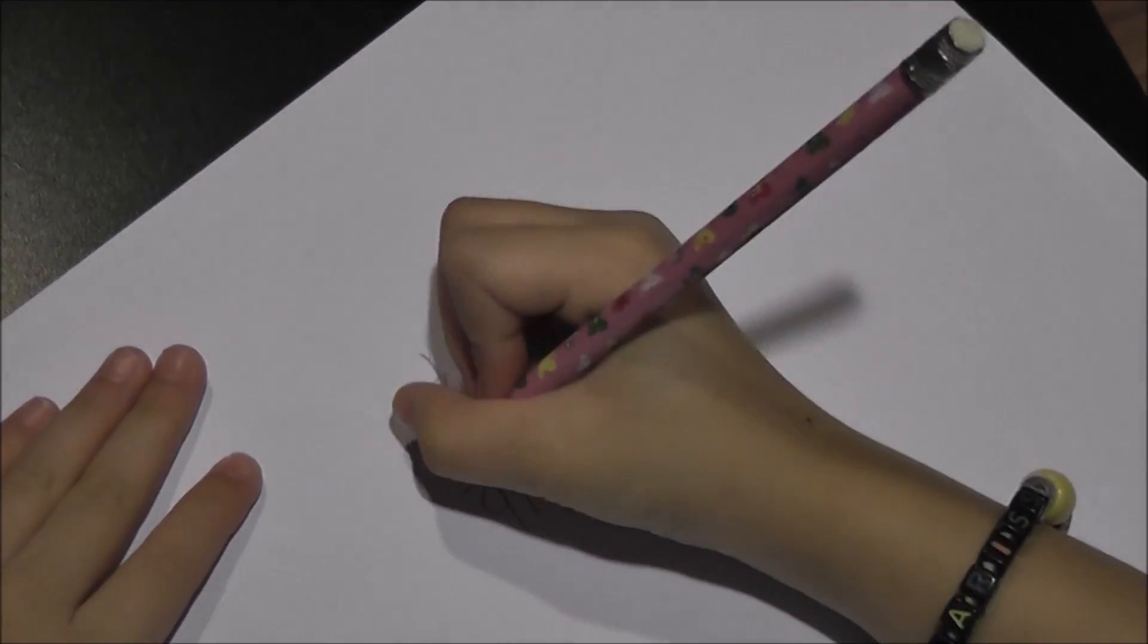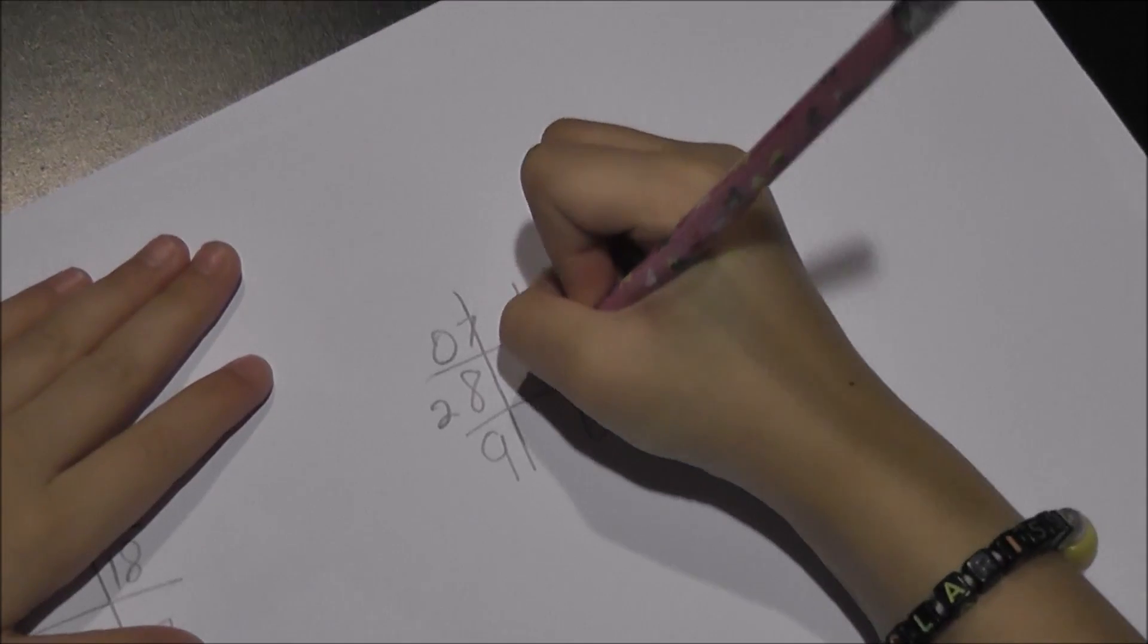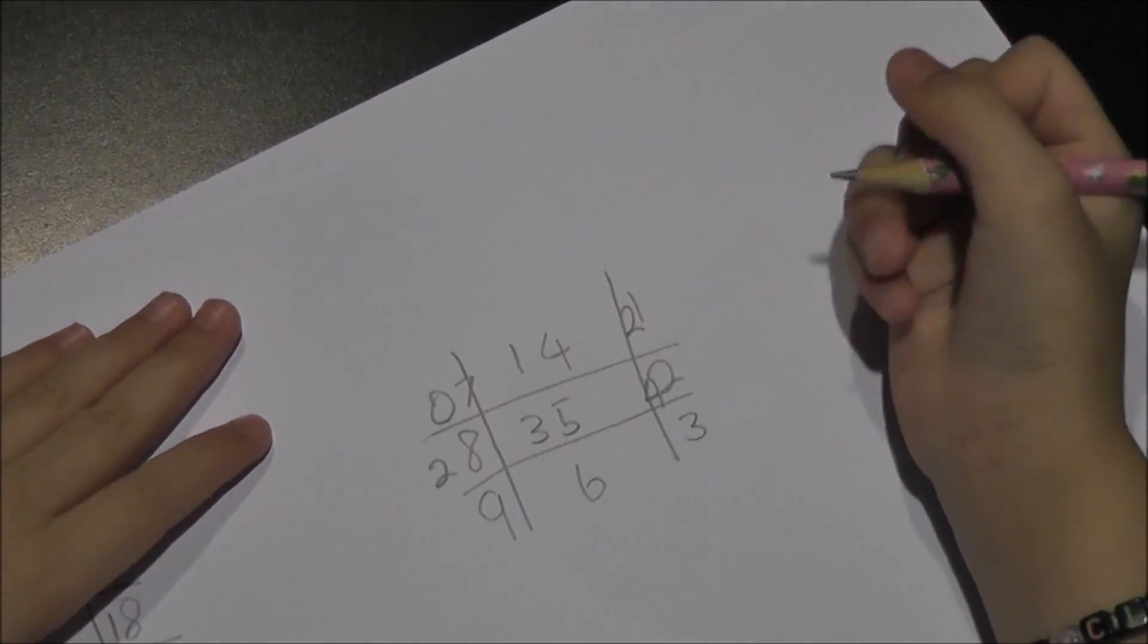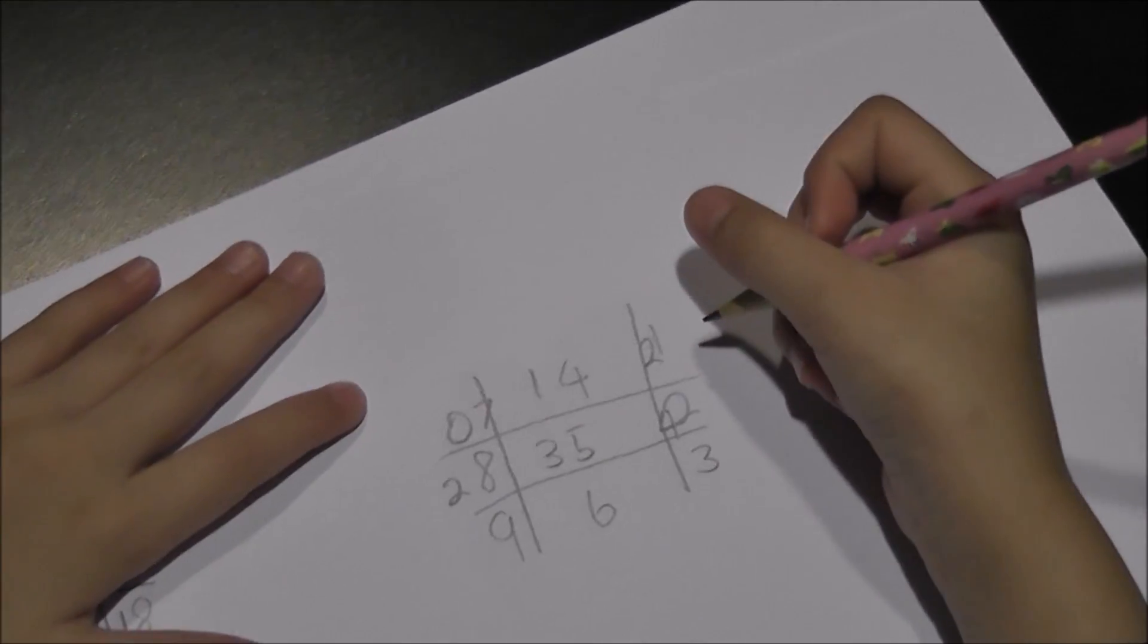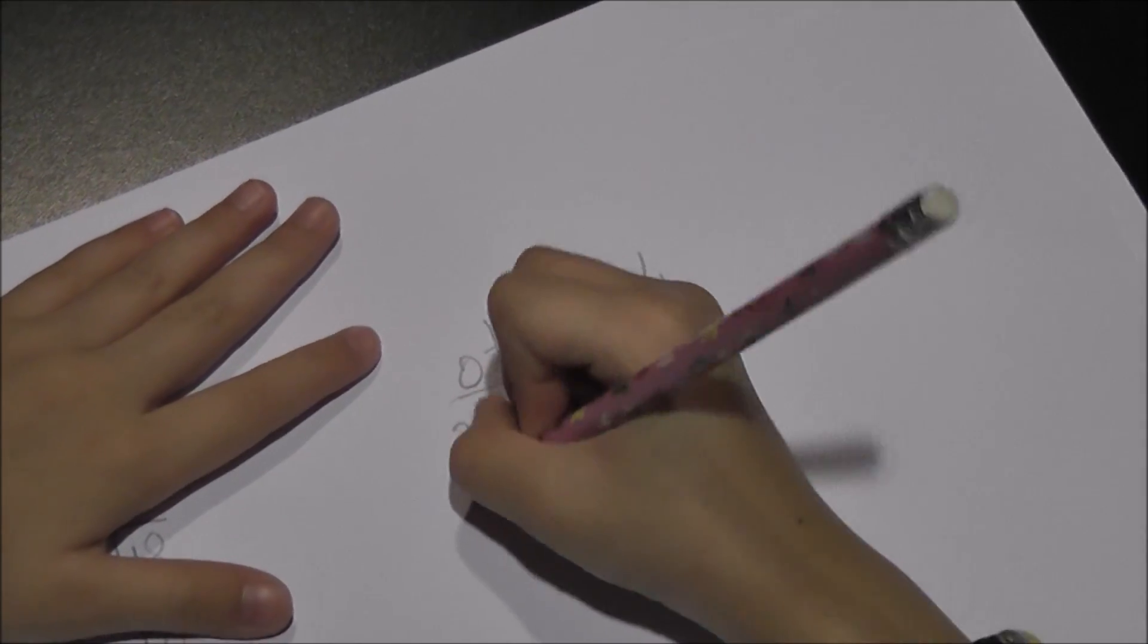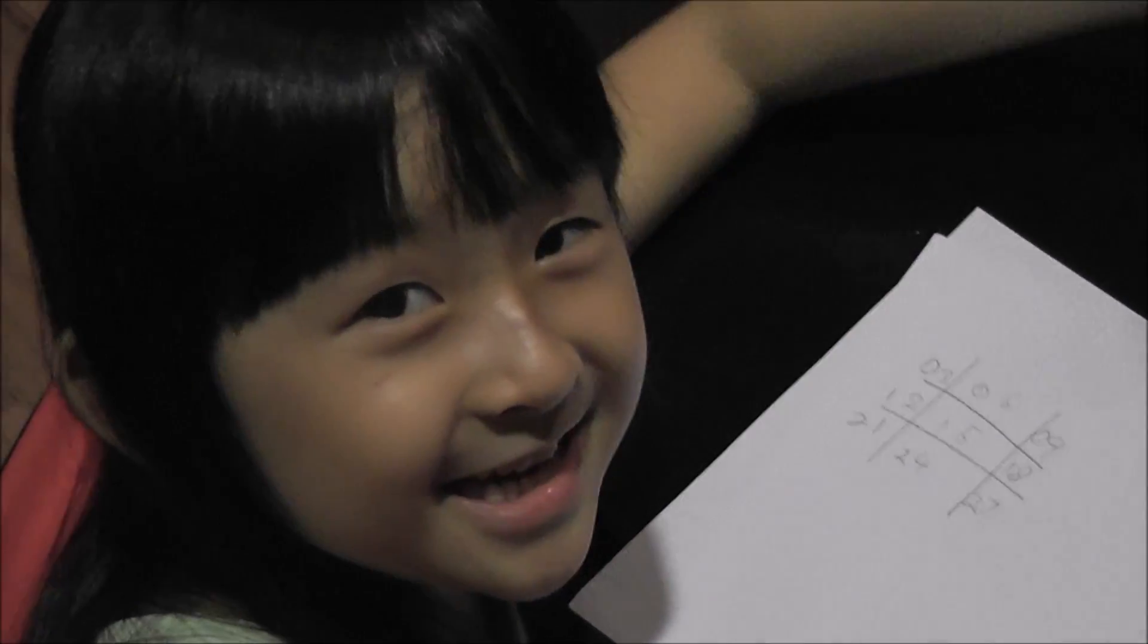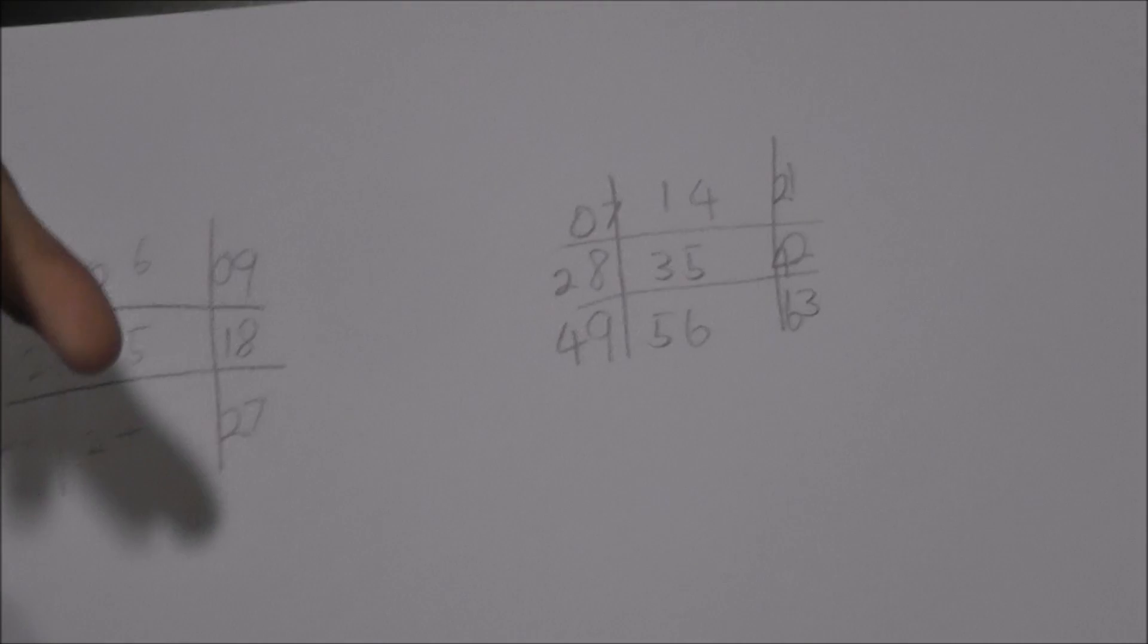For the first row, we will add 0, 1, 2. And then the second row, we will add 2, 3 and 4. For the third row, we will add 4, 5 and 6. Ta-da! Here's how you make the multiplication table of 7.